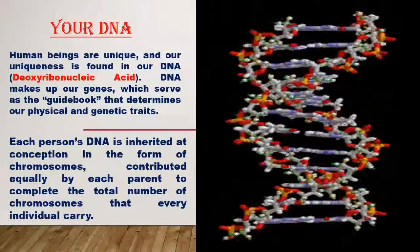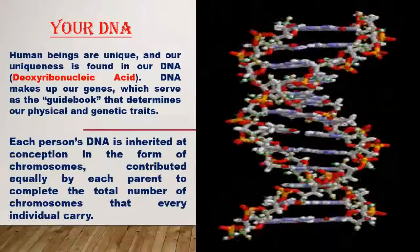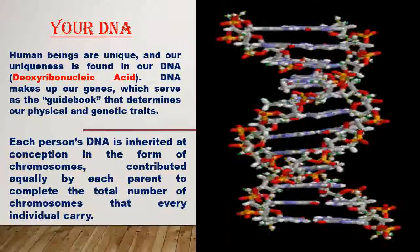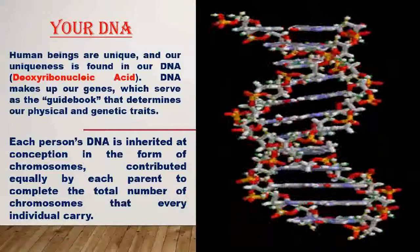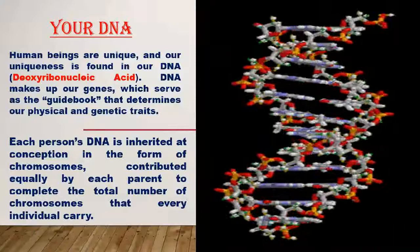Now, you can see on your screen, human beings are unique. And our uniqueness is found in our DNA. That is deoxyribonucleic acid. DNA makes up our genes, which serve as the guidebook that determines our physical and genetic traits. So, each person's DNA is inherited at conception in the form of chromosomes, contributed equally by each parent to complete the total number of chromosomes that every individual carries.